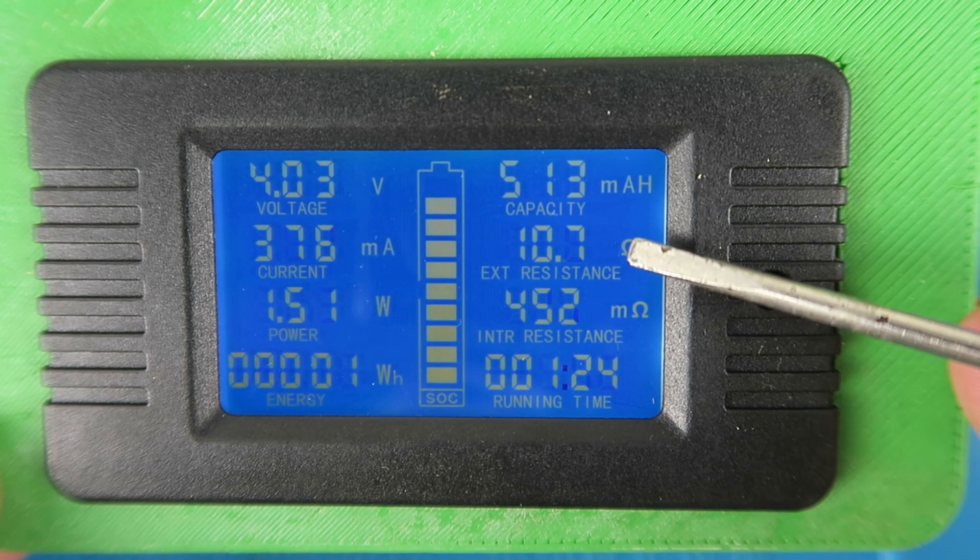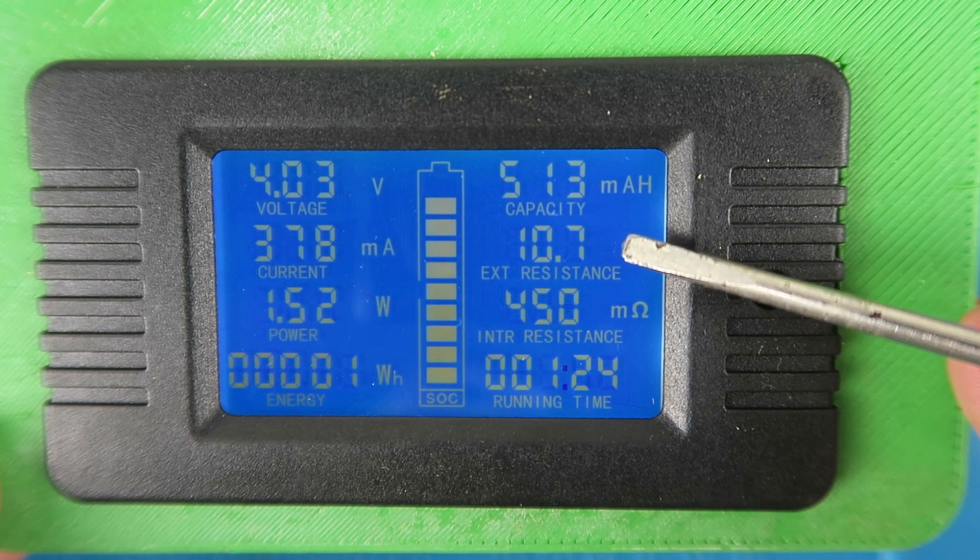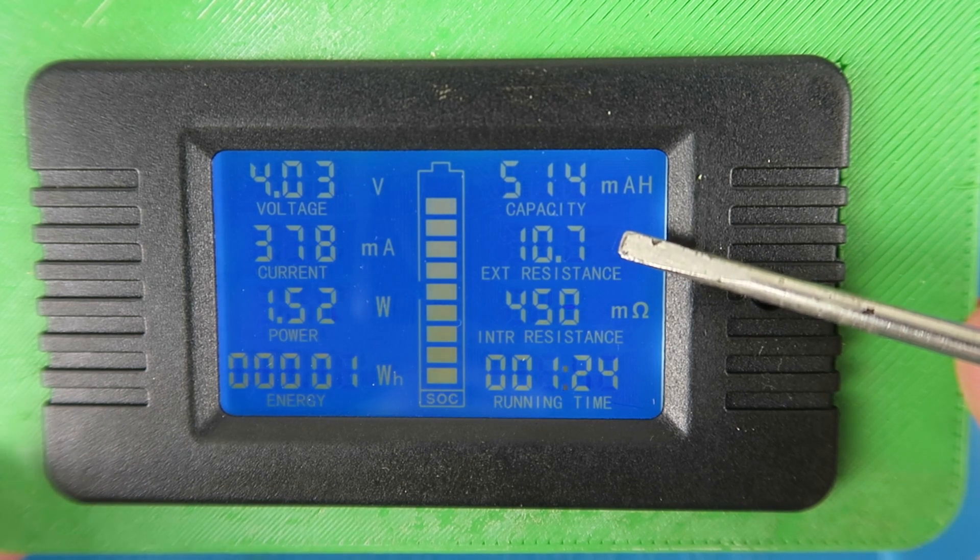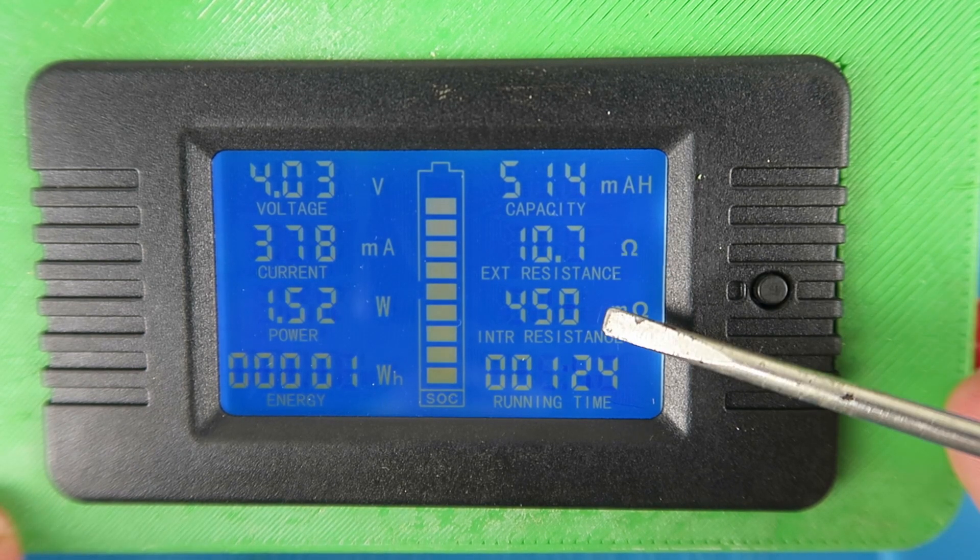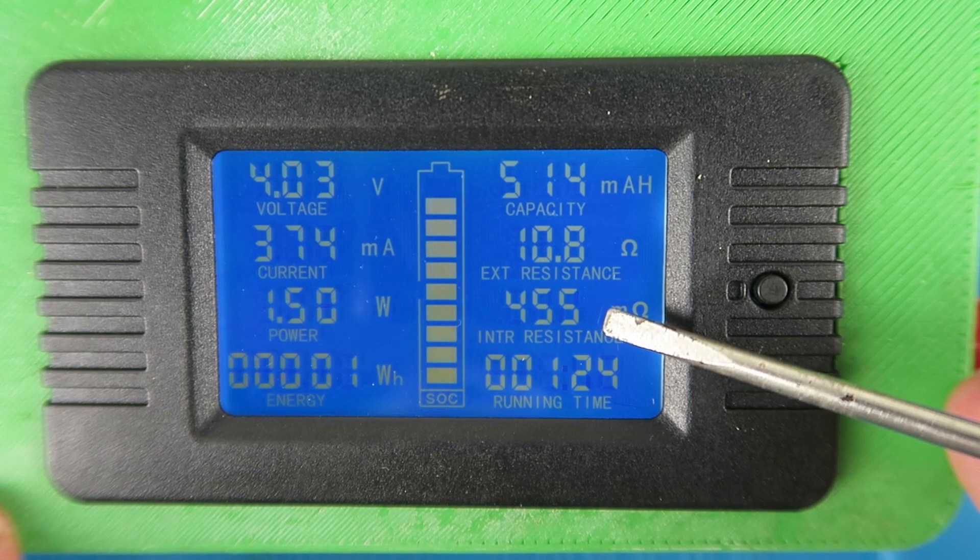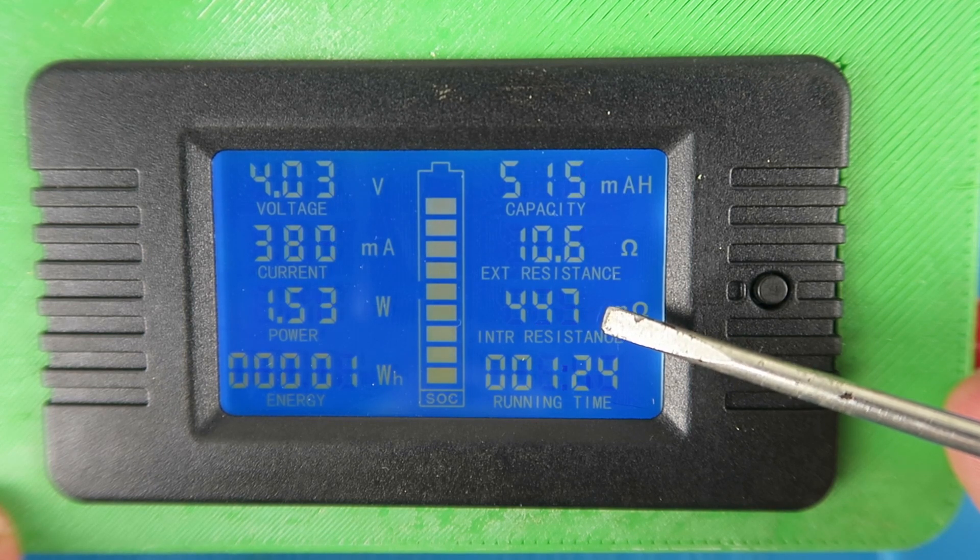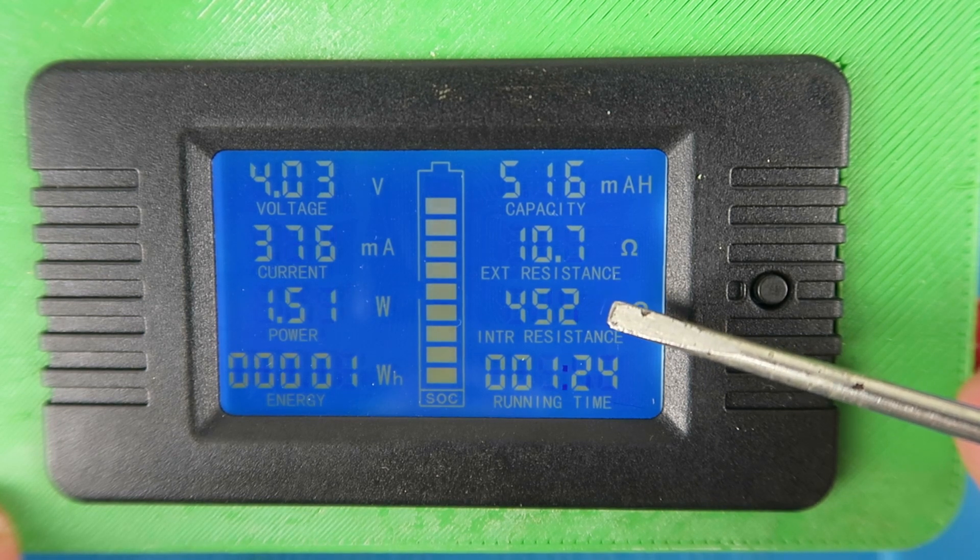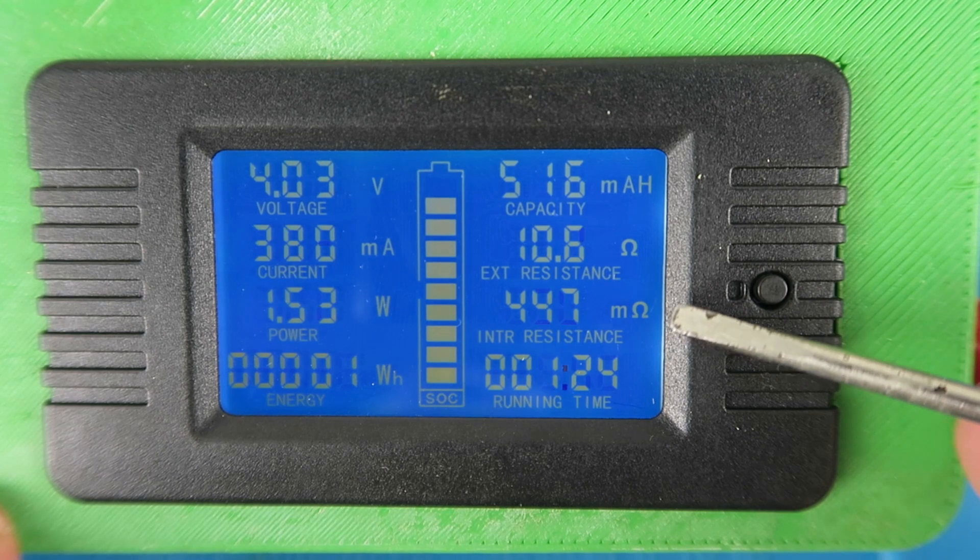And the external resistance, we saw that it's a 10 ohm resistor therefore no surprise it says it's 10.6, 10.7. Here we can see the measurement of the internal resistance of the battery or cell under test. Here it's showing 450 odd milli ohms.